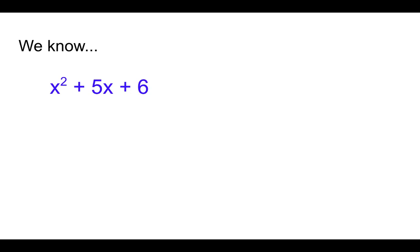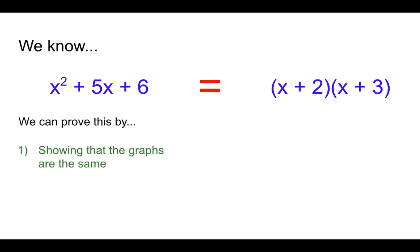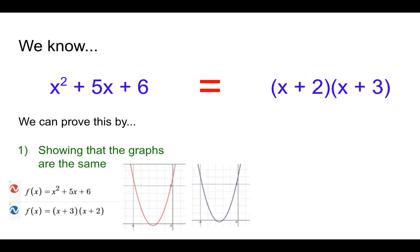We know that x squared plus 5x plus 6 is equal to x plus 2 times x plus 3. We know this, and we can prove this, by typing both into Desmos and showing that the graphs are the same. If we type them into Desmos, they lie directly on top of each other. The red and the blue lines will overlap.